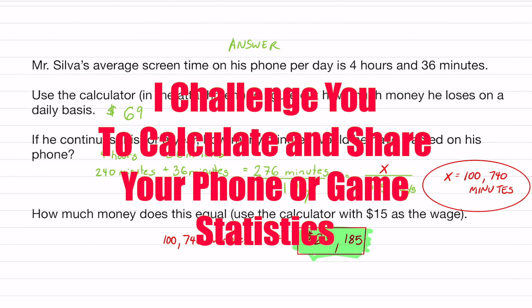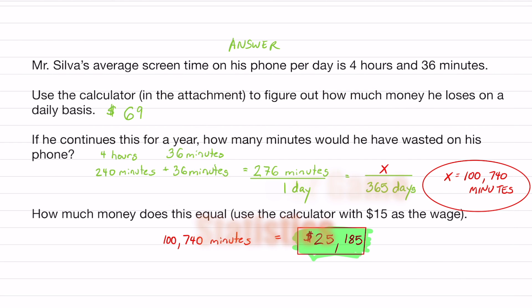I dare you guys to put in the comment box what your amount of money times $15 an hour will equal. If you calculate your phone time for a year, I dare you, I will pin the highest score. And I think that'd be pretty funny.